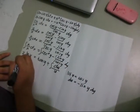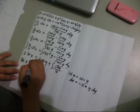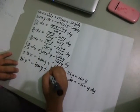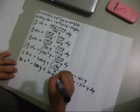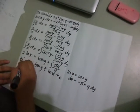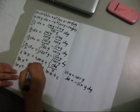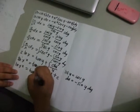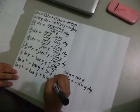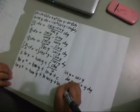Then this will become: ln of x squared is equal to tangent y plus ln of u plus c. And then, ln of x squared is equal to tangent y plus ln of cosine y plus ln of c.